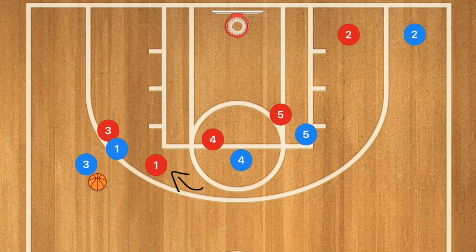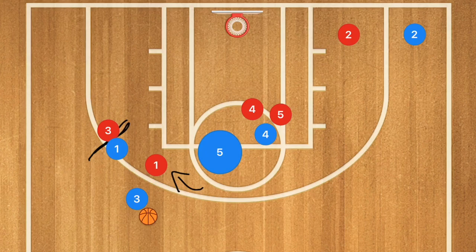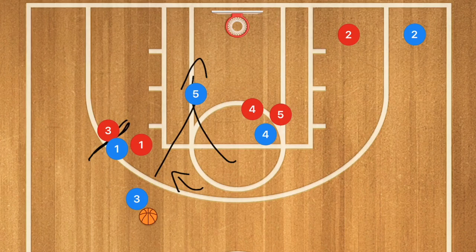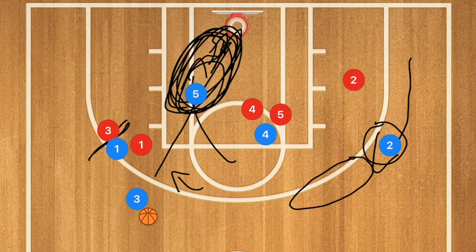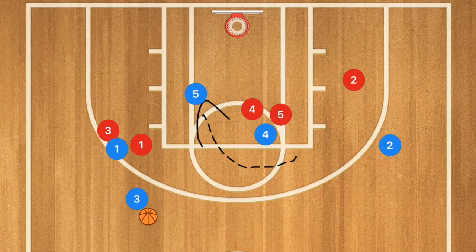Player 4 is then going to set a screen for player 5. At this time, player 3 is still going to be using player 1 as a screen, and player 5 is going to be cutting towards the rim. We're looking for either a shot from player 3, a pass to player 5 for the layup, or player 2 popping up and being open for a shot as well. Our number one option in this play is player 5.